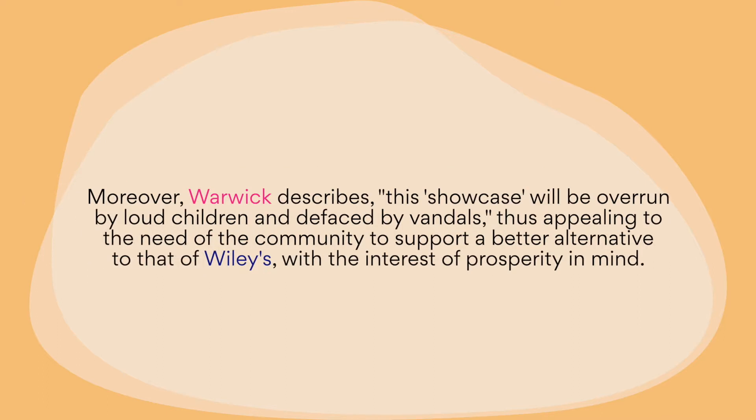In the next sentence, there's still more comparison with Wiley, especially where she says 'first appealing to the need of community to support a better alternative to that of Wiley's.' Rather than just finishing with 'appealing to the need of the community to support another alternative,' what Sarah has done is switch that out to say 'a better alternative to that of Wiley's,' which makes a more tangible, direct comparison with article one. You can see how just the smallest shifts in word choice can really empower your essay and help you satisfy certain criteria points expected of you. Pretty much almost all of the sentences in this body paragraph have a constant going back and forth between Warwick and Wiley.